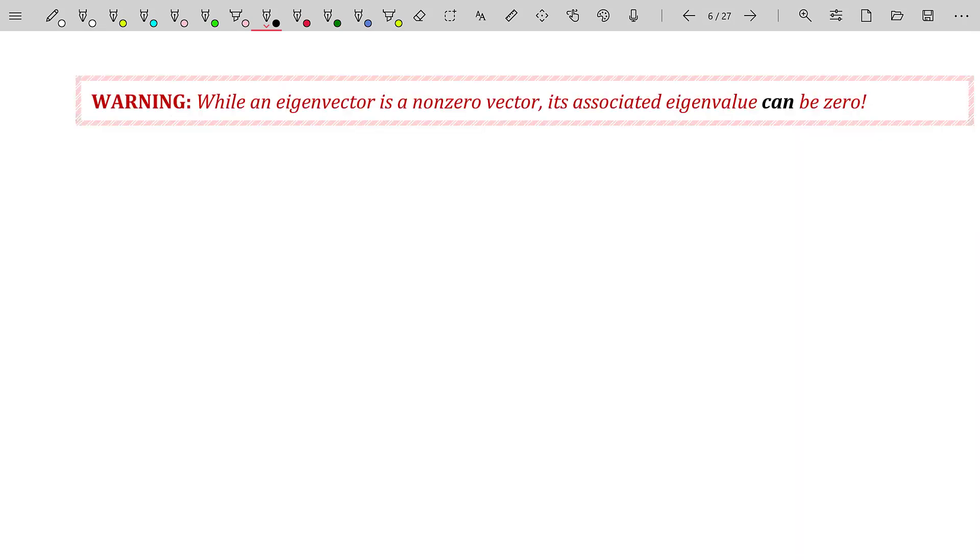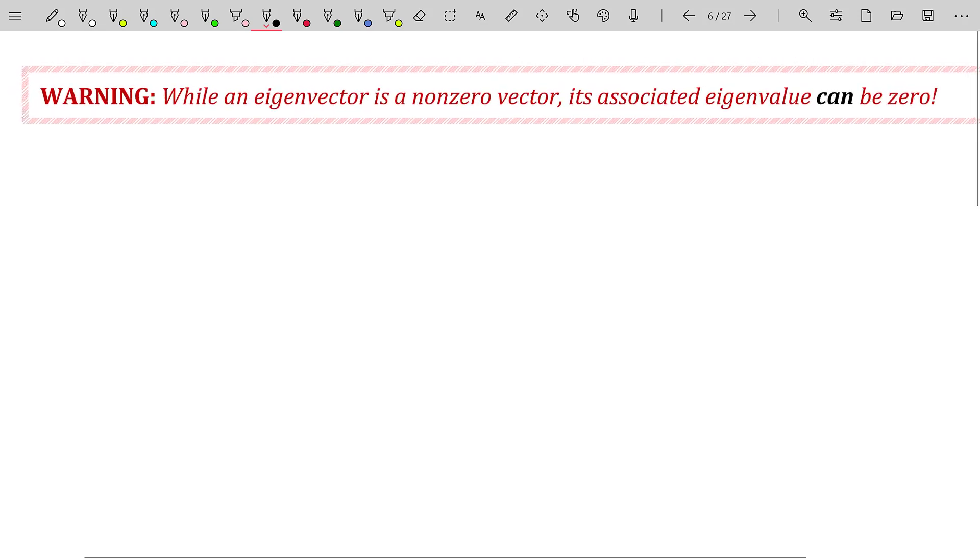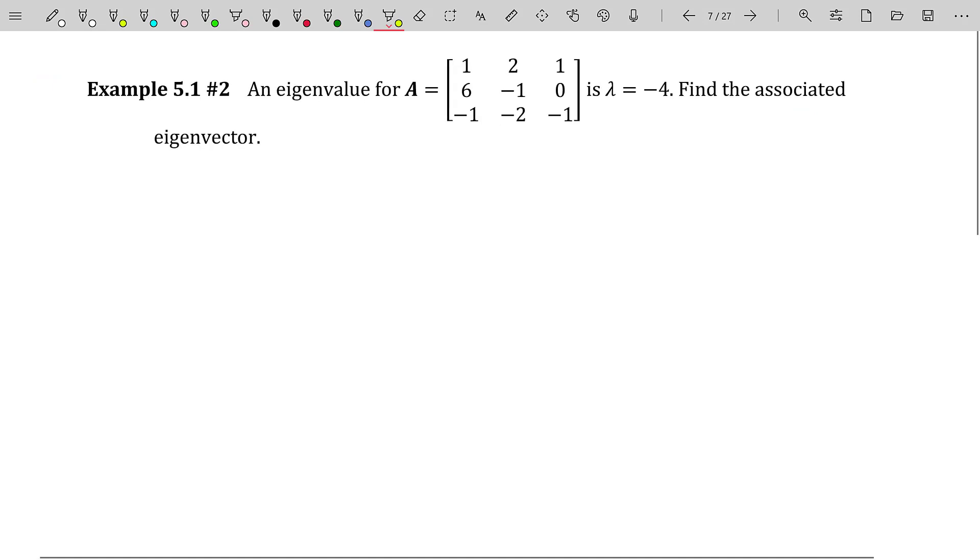Now, I already stated this in that previous example, but it bears repeating. While an eigenvector is a non-zero vector, its associated eigenvalue can actually be zero. And we've just seen that as a final example. And yes, I did say a final example in this video.